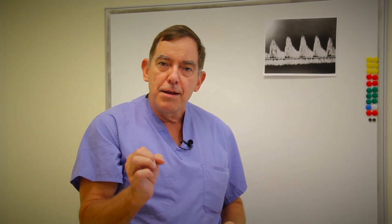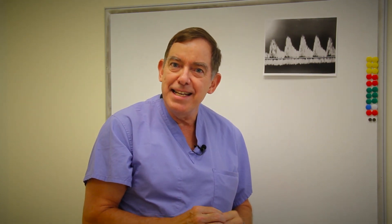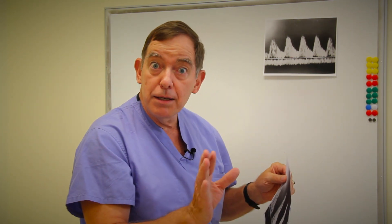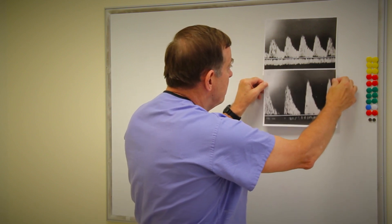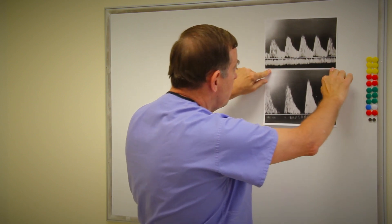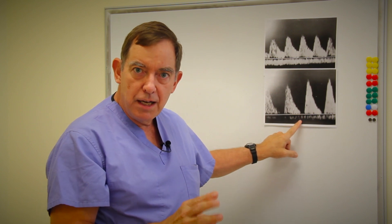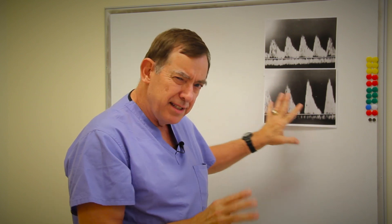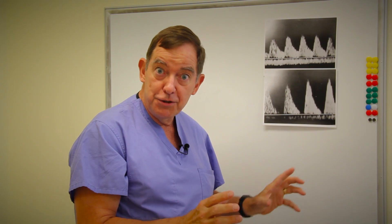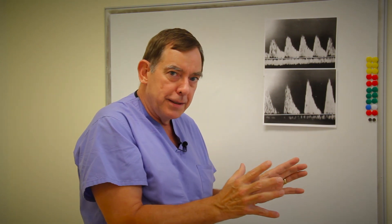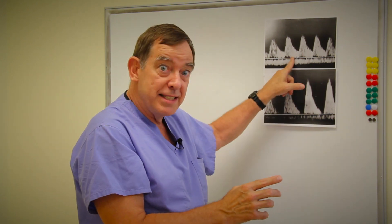Now when the placenta starts getting diseased and the vasculature gets stiff, the blood flow at that point in time can go away. So we can have what's called absent end diastolic blood flow. The placenta is getting a little bit rigid, the vasculature is getting a little bit rigid, and so it isn't flowing the way it does normally when it's elastic.